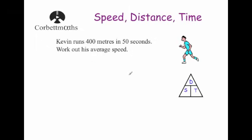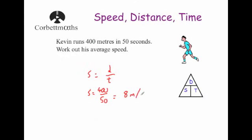It's not always miles per hour — it might be meters per second. Kevin runs 400 meters in 50 seconds; work out his average speed. Speed = distance ÷ time = 400 ÷ 50 = 8 meters per second, written as m/s.